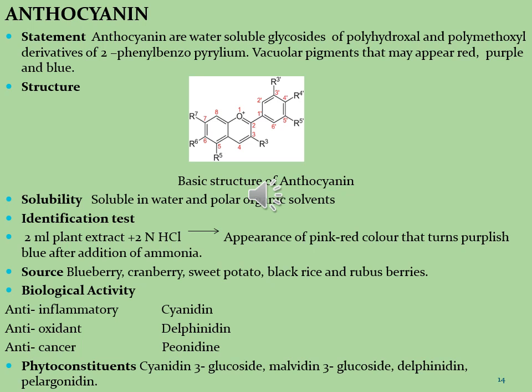Anthocyanins are soluble in water and polar organic solvents. The identification test: 2 ml of plant extract is added to normal hydrochloric acid; appearance of a pink-red color that turns purplish blue after addition of ammonia indicates the presence of anthocyanin molecules. Anthocyanins are isolated from blueberry, cranberry, sweet potato, black rice, and uva ursi berries. Biological activities: cyanidin acts as anti-inflammatory, delphinidin as antioxidant, and peonidin as anti-cancer agent. Phytoconstituents include cyanidin-3-glycoside, malvidin-3-glycoside, delphinidin, and pelargonidin.